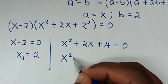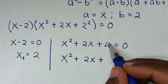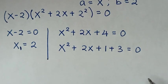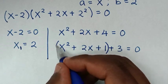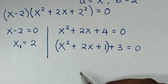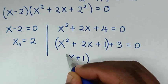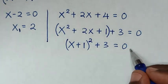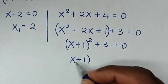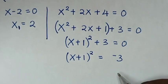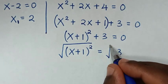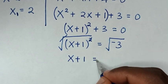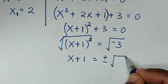So we have x² + 2x + 4, and we rewrite 4 as 1 + 3, giving x² + 2x + 1 + 3 = 0. We can now group: x² + 2x + 1 is the same as (x + 1)², so it becomes (x + 1)² + 3 = 0. Taking 3 to the right side: (x + 1)² = -3. Applying square root to both sides, the square cancels, giving x + 1 = ± √(-3).